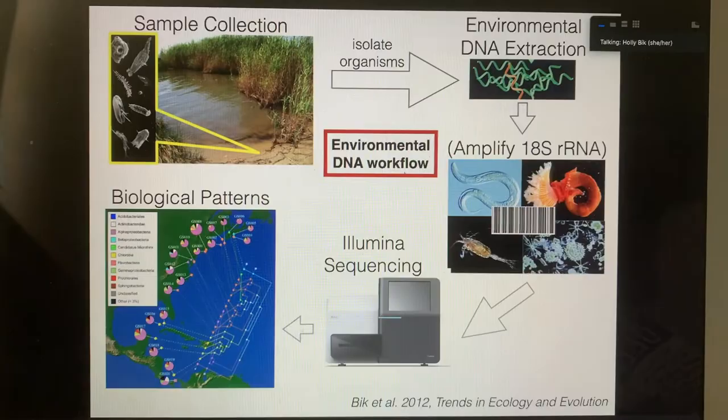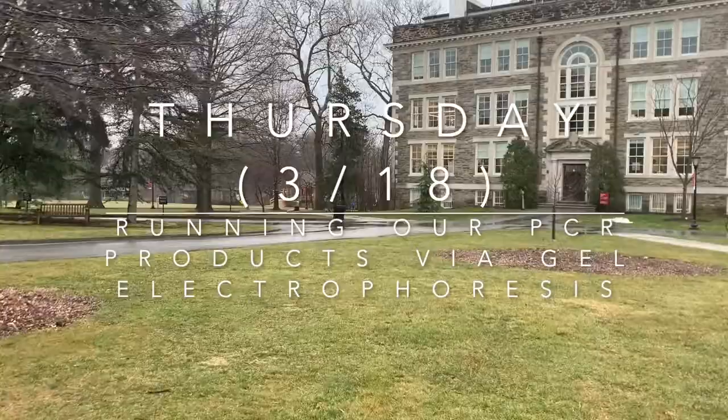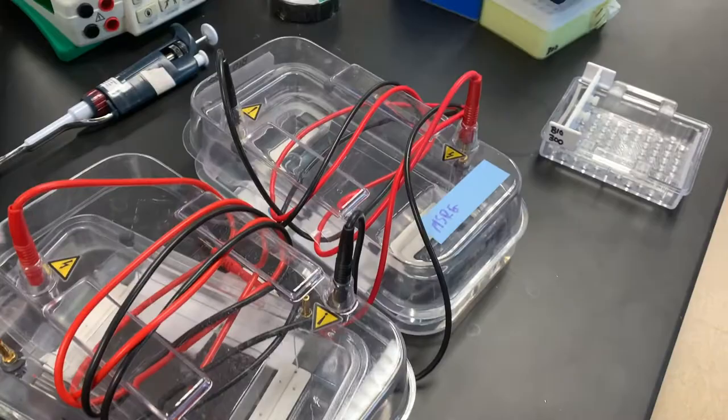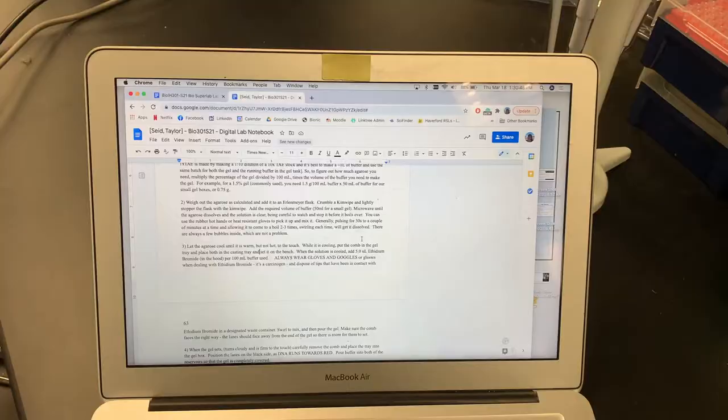So for Thursday's session, we ran our PCR product on an agarose gel via gel electrophoresis. For our phase one project, this is the point where we're hitting a fork in the road to see whether we're going to proceed with TA cloning or troubleshoot our PCR based on the results we get from today's gel.